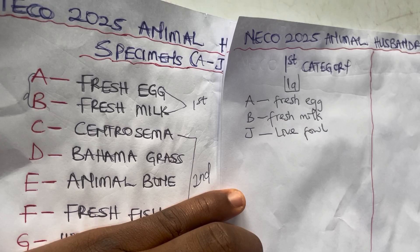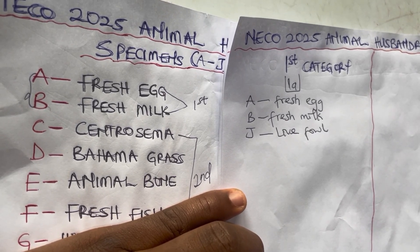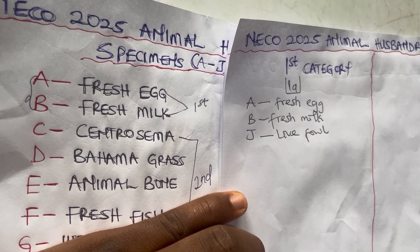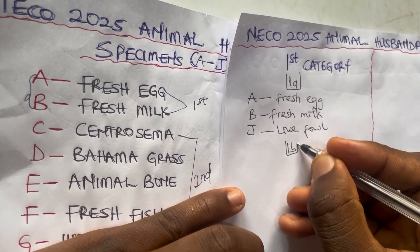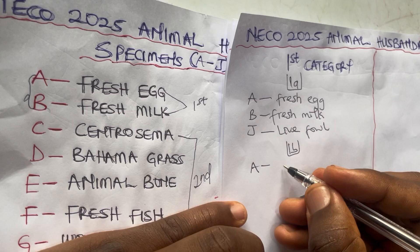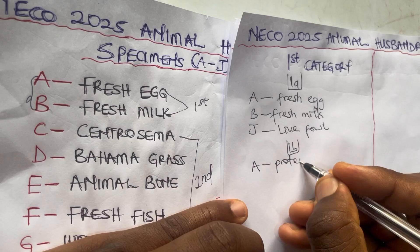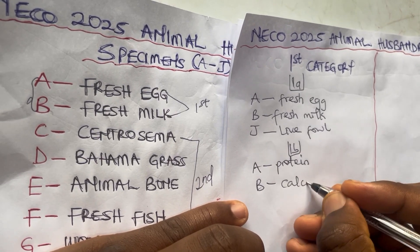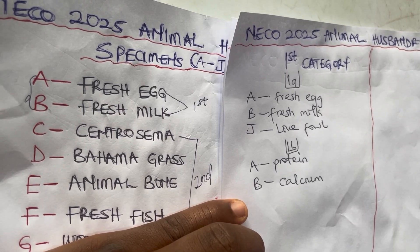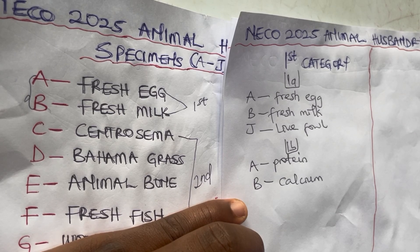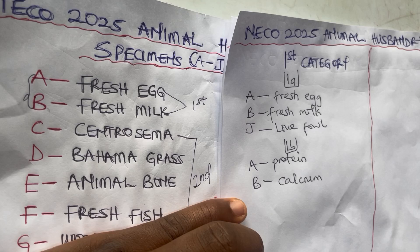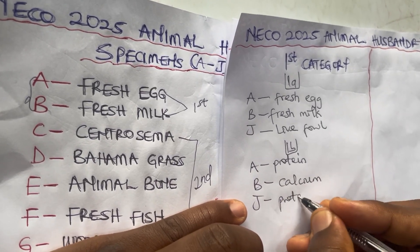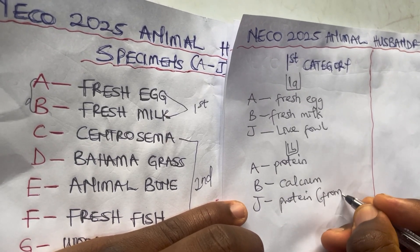Another question they can ask is to state one major nutrient found in each specimen. For specimen A (fresh egg), the major nutrient is protein. For specimen B (fresh milk), the major nutrient is calcium — though it also contains protein, calcium is in greater amount. For specimen J (live fowl), the major nutrient is also protein, obtained from its meat.